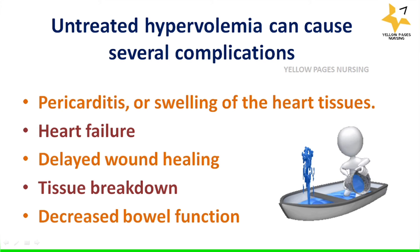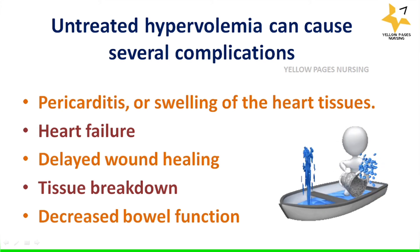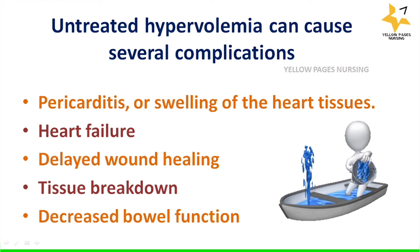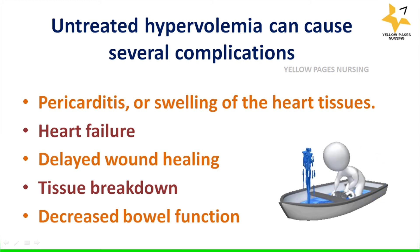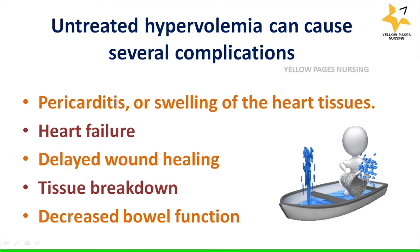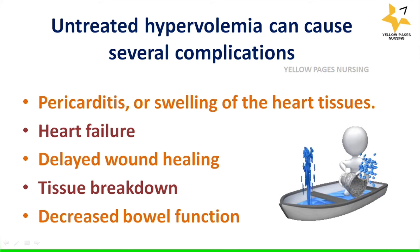Untreated hypervolemia can cause severe complications, which include pericarditis — swelling of the heart tissues. Pericarditis refers to the inflammation of the pericardium, two thin layers of a sac-like tissue that surround the heart, hold it in place, and help it work.